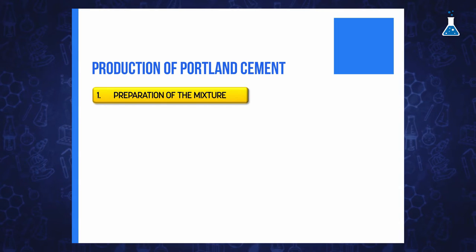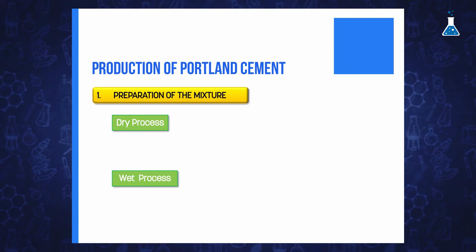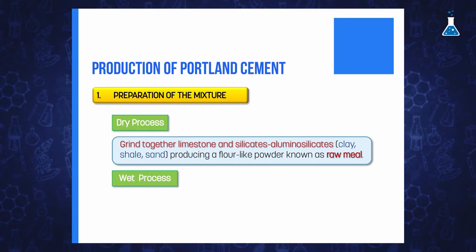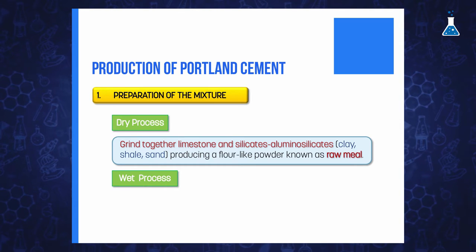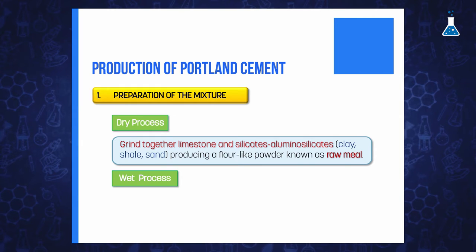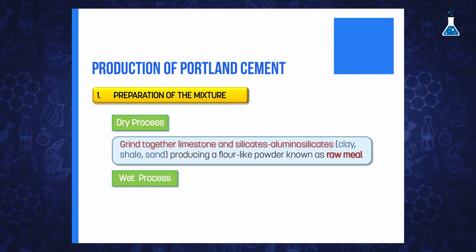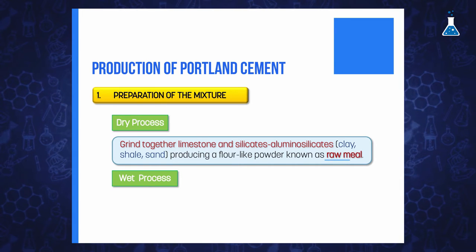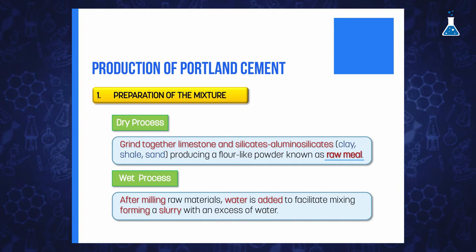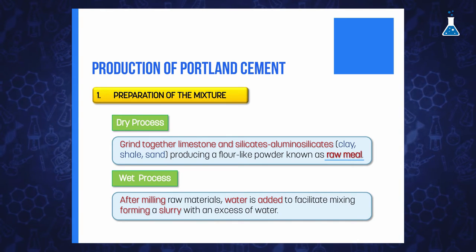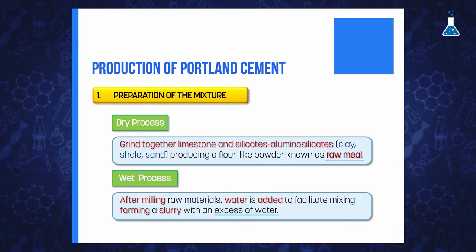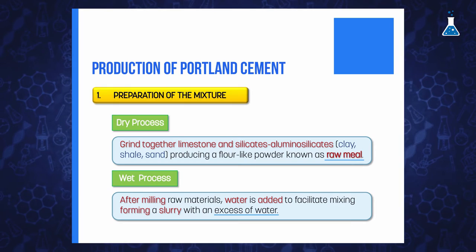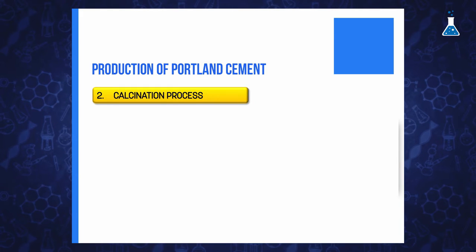Cement is produced in the following steps. First, the preparation of the mixture, which can be done by a dry process or a wet process. The dry process is useful when the raw materials are hard, and consists of grinding together in appropriate proportions limestone and a source of aluminum silicate such as clay, shale, or sand, producing a flour-like powder known as the raw meal. For the wet process, water is added to the raw materials after milling to facilitate mixing, forming a slurry with a high percentage of water. This process requires more energy to eliminate the excess water, and nowadays the dry process is the method employed.